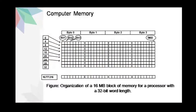In this figure, we can see that there is an organization for a 16 MB block of memory for a processor. This processor uses a 32-bit word length. The bits are arranged horizontally, so the first square is for bit 1, the second bit 2, and in this way 32 bits are aligned, and these 32 bits form one word. Similarly, if we see vertically, then we have from 0 to 16 MB of block of memory.